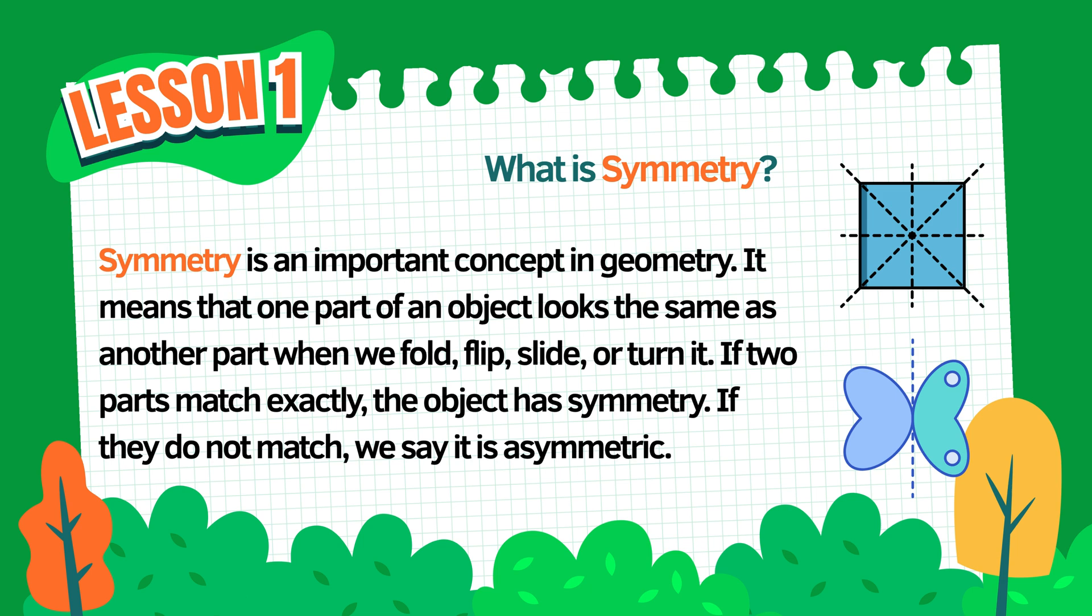If they don't match, we call it asymmetric. You can think of symmetry like a perfect balance—both sides of the object are equal in size and shape. Let's look at some examples.